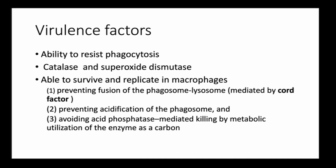Virulence factors of Nocardia include the ability to resist phagocytosis through hyphal formation. They also possess catalase and superoxide dismutase, allowing survival in the presence of oxygen. They can survive and replicate in macrophages by preventing phagosome-lysosome fusion — similar to mycobacteria's cord factor — and by preventing acidification of the phagosome. They also avoid acid-phosphatase-mediated killing through metabolic utilization of the enzyme.